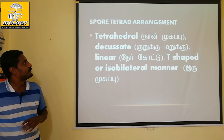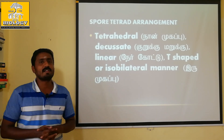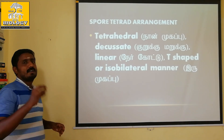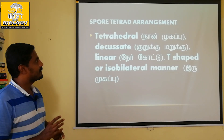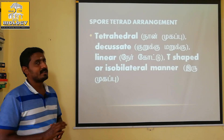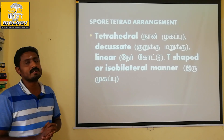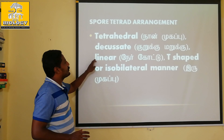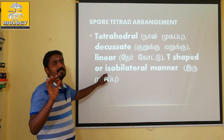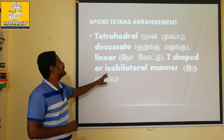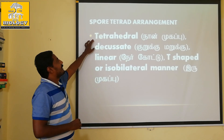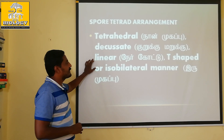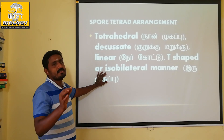In the spore tetrad stage, there is a shape. The shape of the microspore tetrad has four types: tetrahedral, decussate, linear, and isobilateral. Four arrangements are possible.